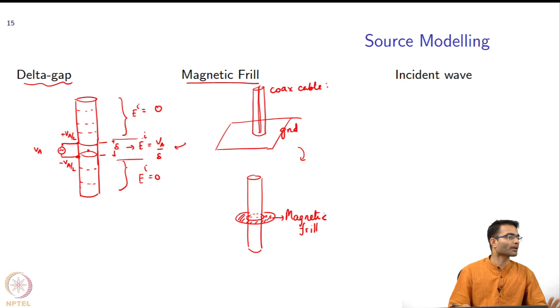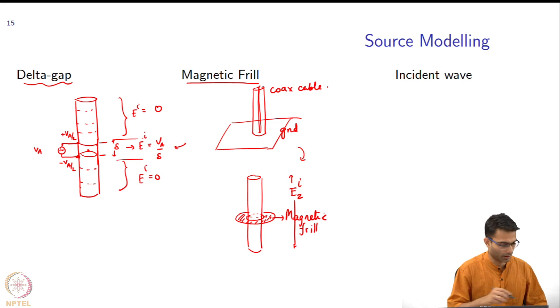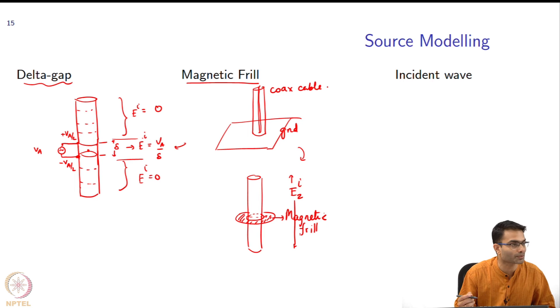And this magnetic frill, there are some equations for it which give you some E_i z over the entire length. We won't be using this in this discussion, but there is enough literature on it that you can look up magnetic frill. And finally, the third thing: these are both for a transmitting antenna. For a receiving antenna also, there is an incident wave that will produce an equivalent of a source.